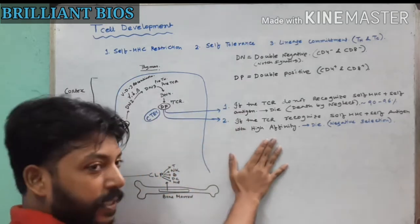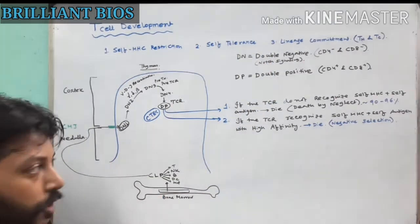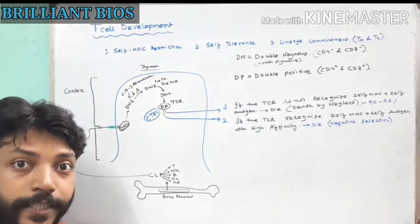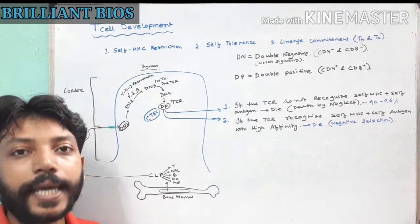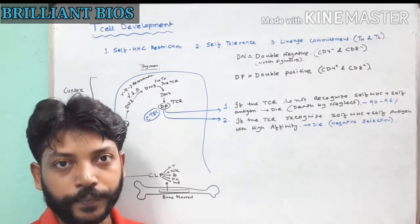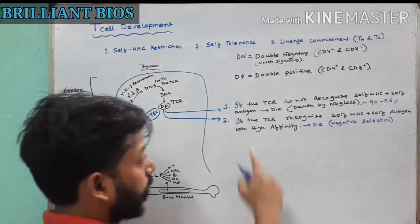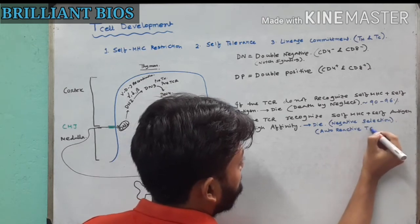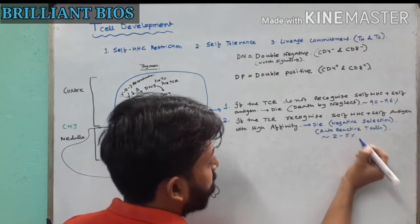These self-reactive double positive cells are called autoreactive T cells. Approximately 2 to 5 percent of cells die due to negative selection. By this mechanism, the thymus controls an important process called central tolerance. Central tolerance means tolerating self-antigens during development in the primary lymphoid organs — the bone marrow and thymus.